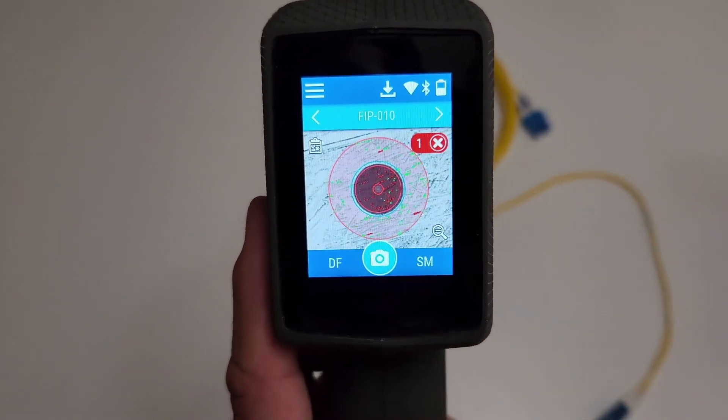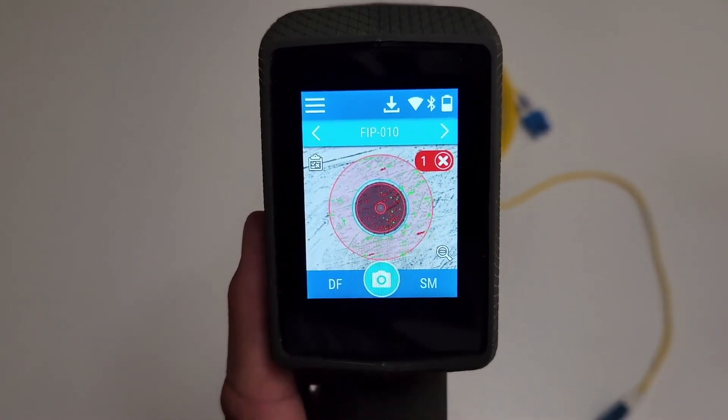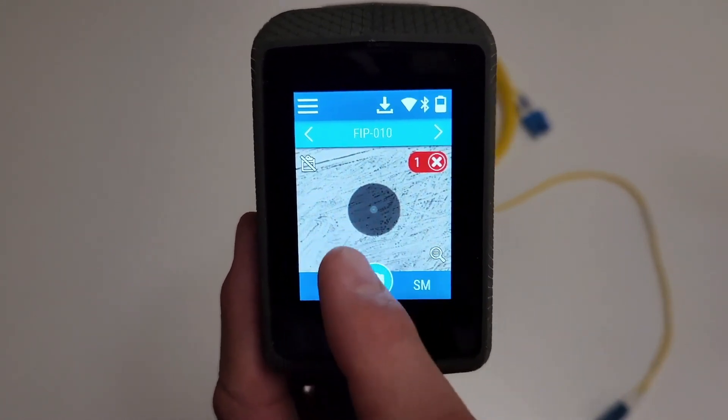It's also possible to remove the overlay with a click on the screen. The image clearly shows the dirt on the end face of Fiber 1.